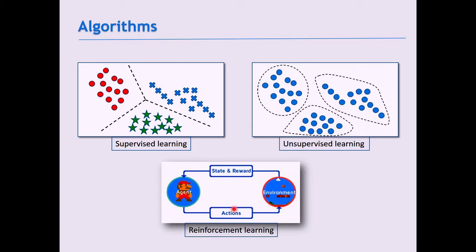In reinforcement learning, imagine playing a Super Mario game — the inputs are every point in the environment and the outputs are which direction to move. It's very hard for a programmer to define all inputs and outputs, so we let the algorithm take actions and reward it based on performance. It tries to make better actions in the next step.